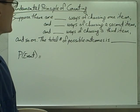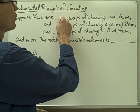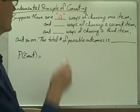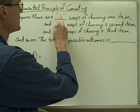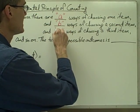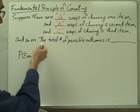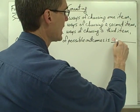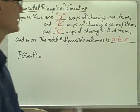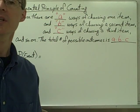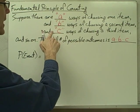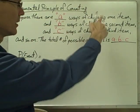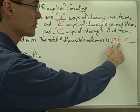The fundamental principle of counting says: suppose there are A ways of choosing one item, B ways of choosing a second item, and C ways of choosing a third item, and so on depending on how many different items you have — then the total number of possible outcomes is just A times B times C. This is exactly what we saw with the sweaters, pants, and shoes: two times four times two.